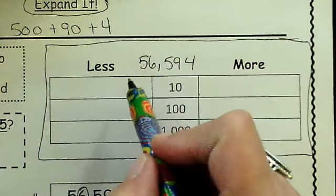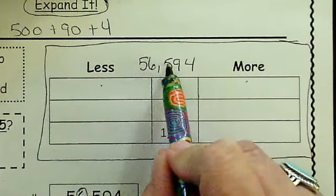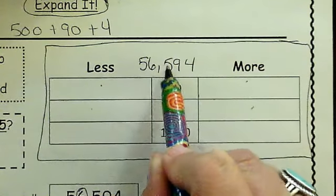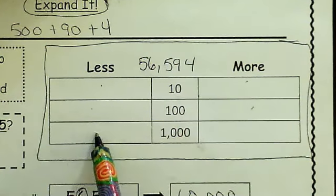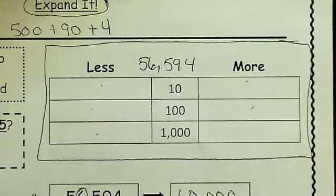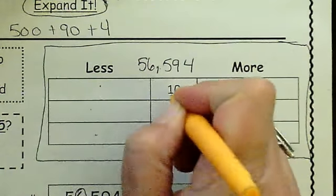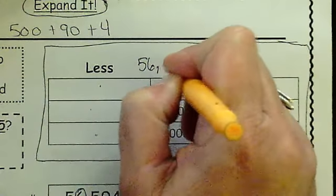I'm going to focus in so all we're seeing is this so that it's nice and big. In this section, you are going 10 less and 10 more than whatever this number is. You're also going to do 100 less and 100 more than this number, and then you're going to do 1,000 less and 1,000 more of this number.